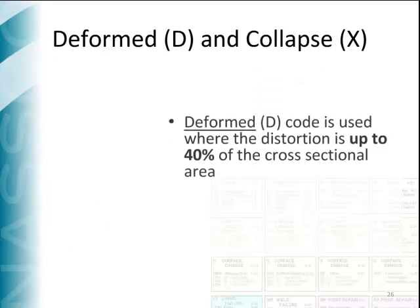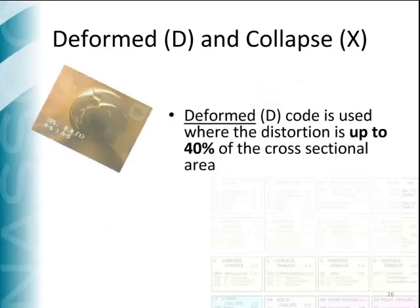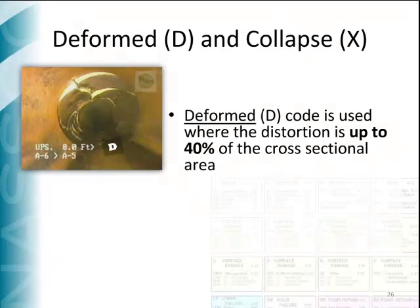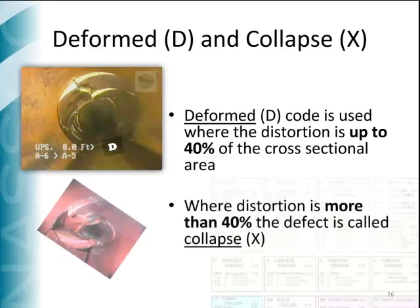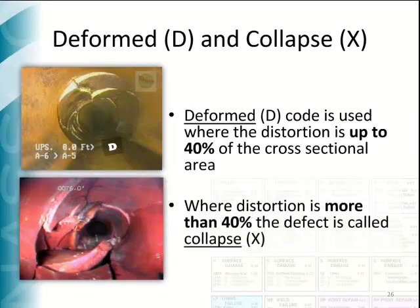The deformed code is represented by the letter D and can be used when the distortion of a pipe wall in rigid pipes is up to 40% of the cross-sectional area. Collapse follows the natural deterioration progression in rigid pipes and is represented by the letter X. The deformation of the pipe walls must be greater than 40% of the cross-sectional area.